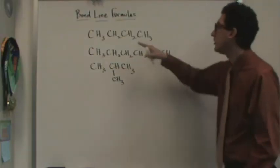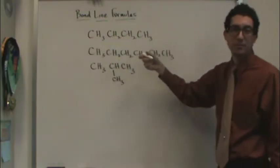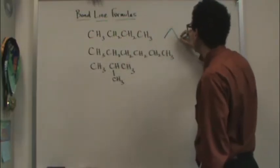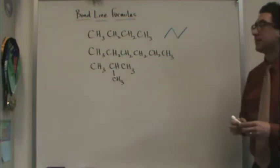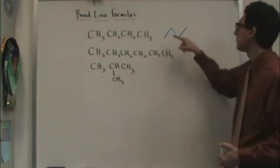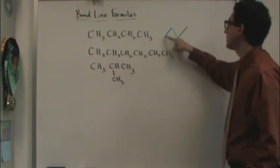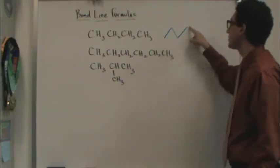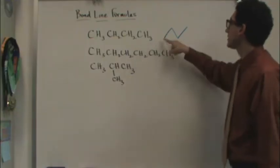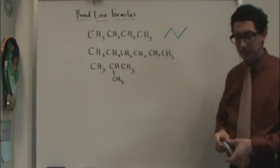So what we do — see how this has four carbons in it? It's actually called butane. We draw it like a zigzag, like that. So this is this. That means there's one, two, three, four carbons — each vertex represents a carbon. And all those hydrogens are at the vertices, but they're not drawn in.